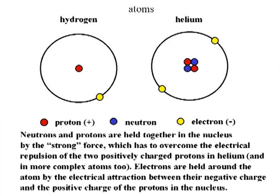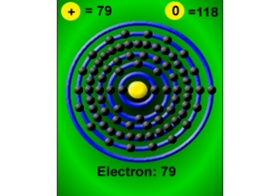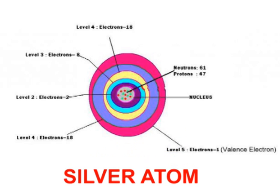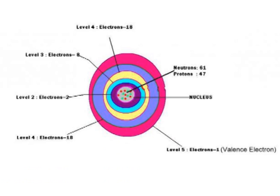The periodic table lists the elements in order of the number of protons in their nucleus. Hydrogen has one proton, so it is the first element. Helium has two protons, so it is the second element. Gold has 79 protons in its nucleus, so it is the 79th element on the periodic table. Silver atoms have 47 protons in their nucleus, so silver is the 47th element on the periodic table.